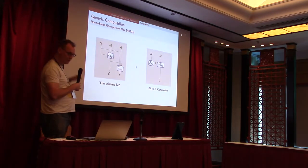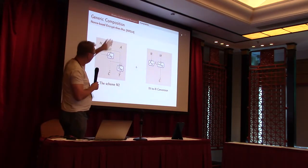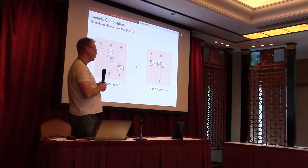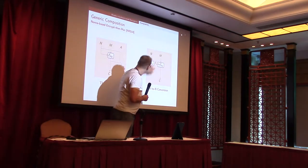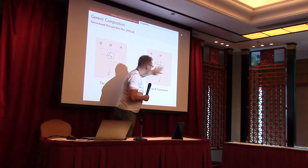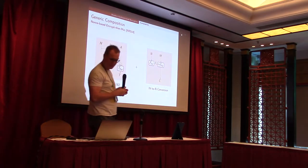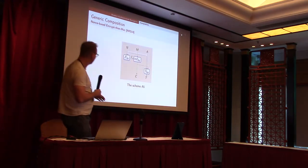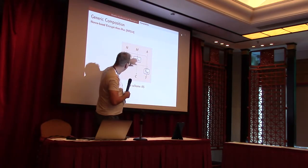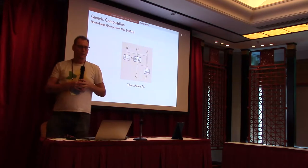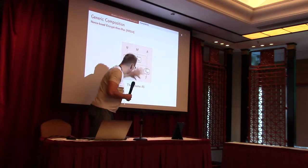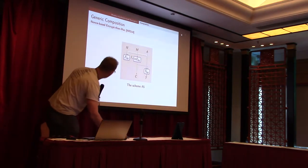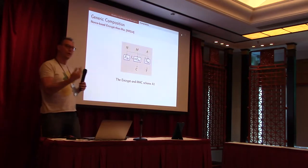Several schemes achieve this and have been analyzed in a nonce setting. Scheme N2, for instance, encrypts and then creates a tag. Another scheme takes a PRF and an IV scheme and builds it into a nonce-based scheme. Combining these gives scheme A5: a PRF, an IV-based scheme, and a message authentication code combined into a single secure scheme. The question now is how secure is this scheme when things start to leak?